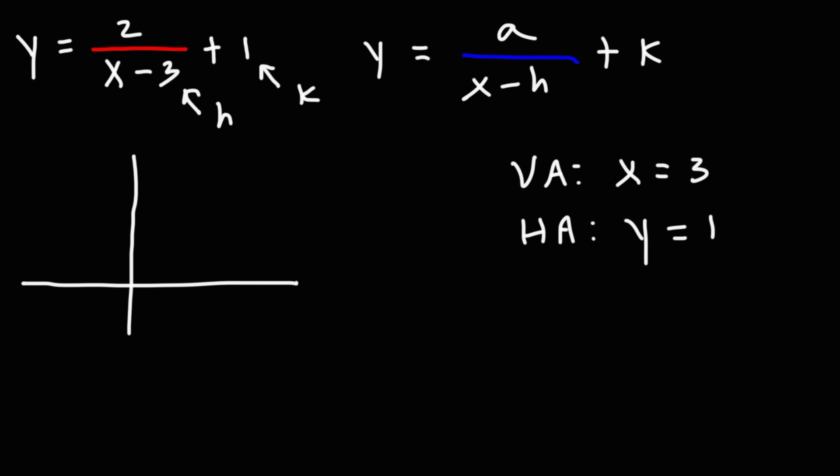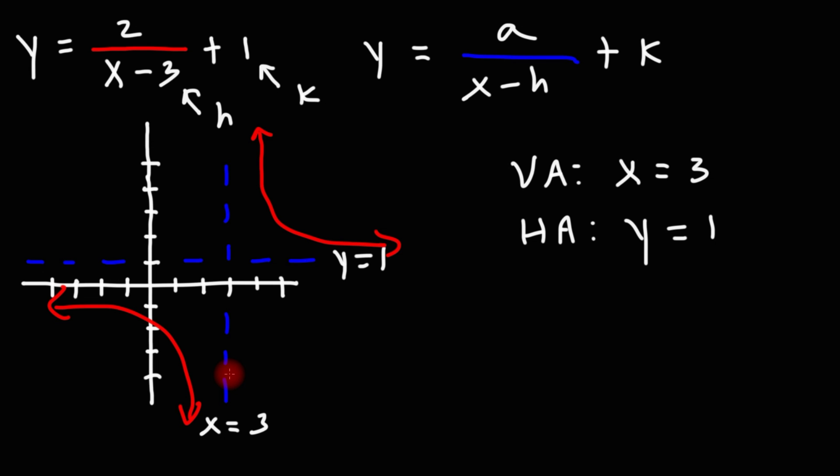Now let's go ahead and draw a rough sketch for this graph. So at x equals 3, we're going to have a vertical asymptote, and at y equals 1, we're going to have a horizontal asymptote. Now if all we wanted was a rough sketch of the graph, because a is positive, we know the graph will be in this quadrant and in this quadrant. That is the quadrants defined by the horizontal and vertical asymptotes, not necessarily by the x and y axis.